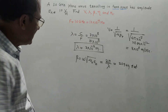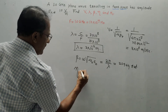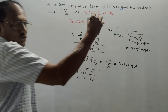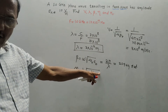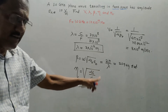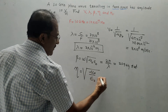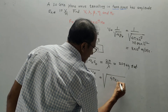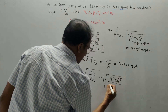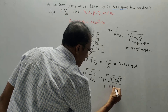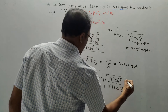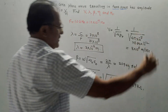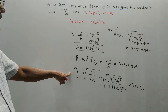Next is eta, the intrinsic impedance. The basic formula is eta equals square root of mu upon epsilon. For free space it is mu_0 upon epsilon_0. Putting mu_0 as 4π × 10^(-7) upon epsilon_0 as 8.854 × 10^(-12), if you solve this, the answer is 377 ohms. This is the intrinsic impedance of free space.